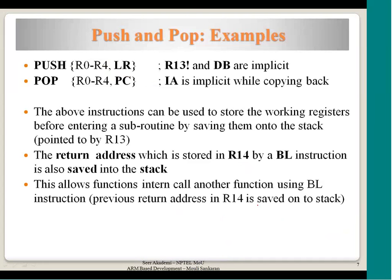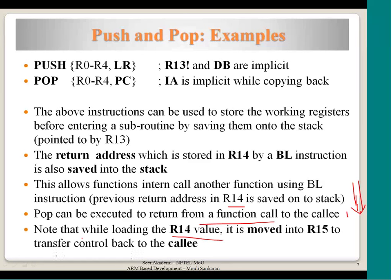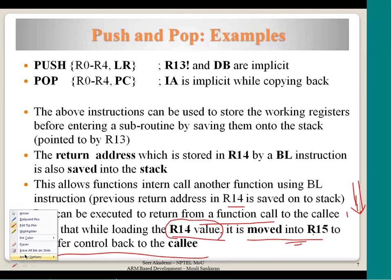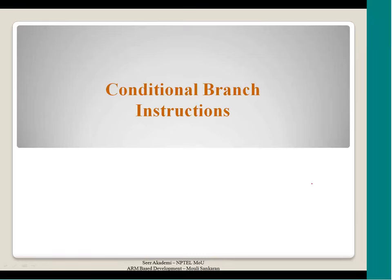By saving R14 to the stack before the nested call, we can restore it after returning from F3, then copy it to PC to return to F1. This kind of nested function calling is only possible when R14 is saved to the stack. Both ARM state and thumb state must support this to allow functions called inside other functions and exceptions inside exception handlers.